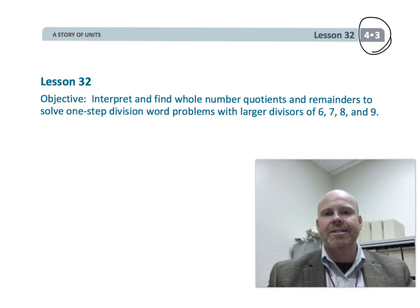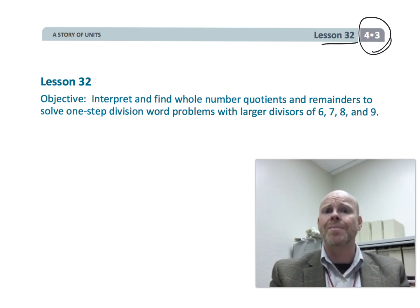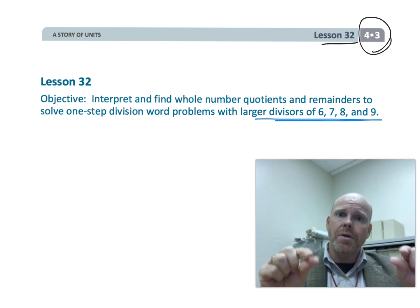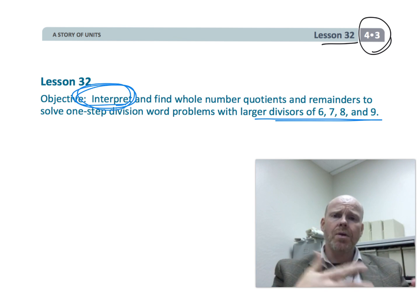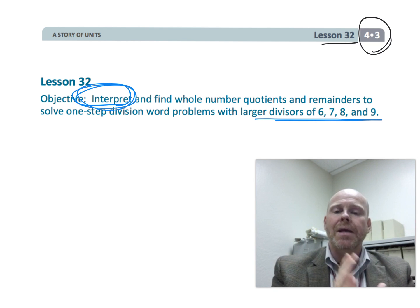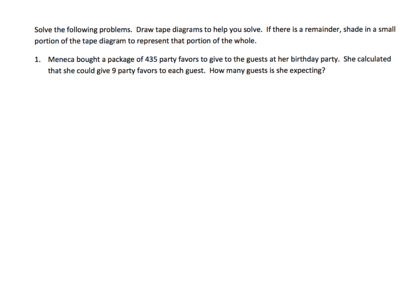This is fourth grade module 3, lesson 32. Students are going to be practicing the standard algorithm for division, dividing by 6, 7, 8, and 9. The real point of this lesson is to have students practice reading the problem and then drawing the model that the problem represents, so students can begin making the connection between the model and the word problem. This lesson will focus on giving students an opportunity to understand the word problem so they can model it appropriately. For these problems, I'm going to show the tape diagram for all of them but only solve the actual division problem for a couple.